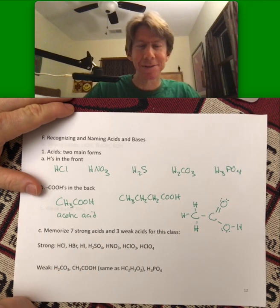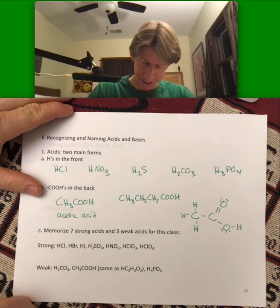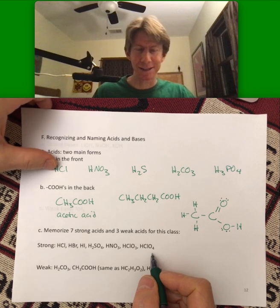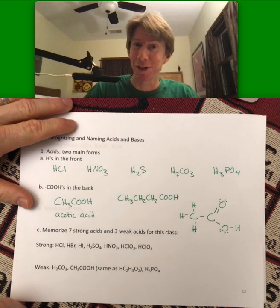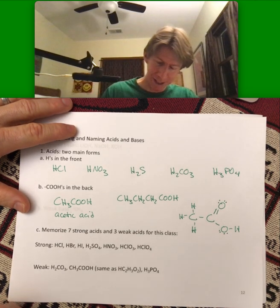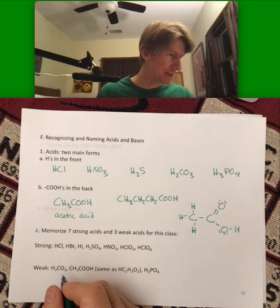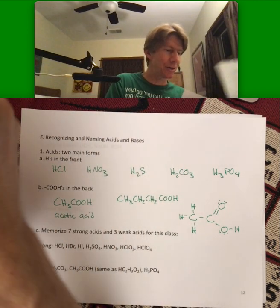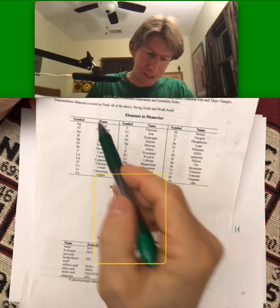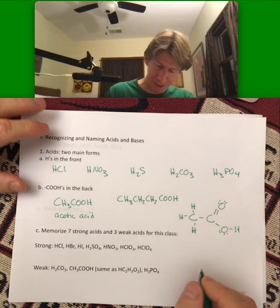Now, for this class, there are only 10 acids that you have to know their names and be able to recognize. Seven of them are strong acids. We're not even going to tell you what a strong acid is yet - we will later. But we do want you to memorize and make flashcards for these seven acids. They're not on your nomenclature list other than to say that on the final, strong acids and weak acids will be on there. And I made up a homework to do just these 10 acids and the couple bases coming.